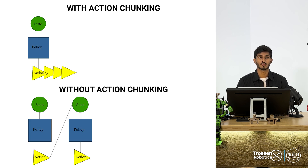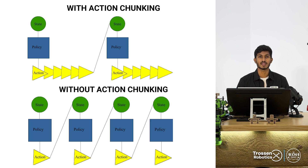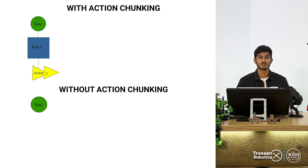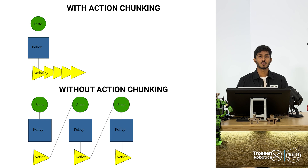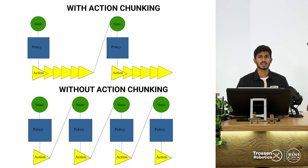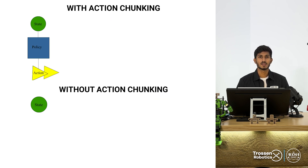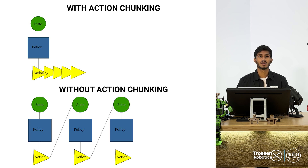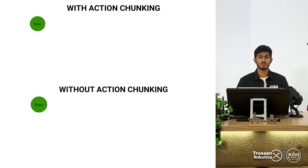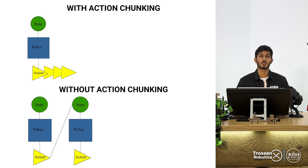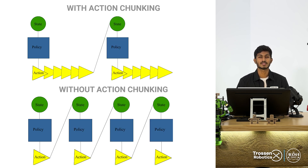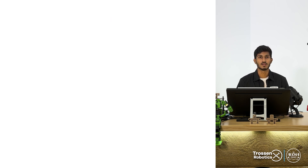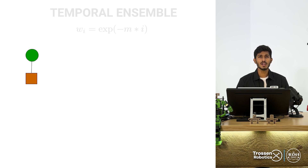This out-of-distribution state results in failure to complete the task. Action chunking addresses this issue by predicting the future k actions from the current state, rather than just one action. So instead of relying on all the states, we rely on the states after every k steps, thereby reducing the compounding error by k-fold. Although this turns the solution into an open-loop system, using it along with temporal ensemble makes it more reliable.